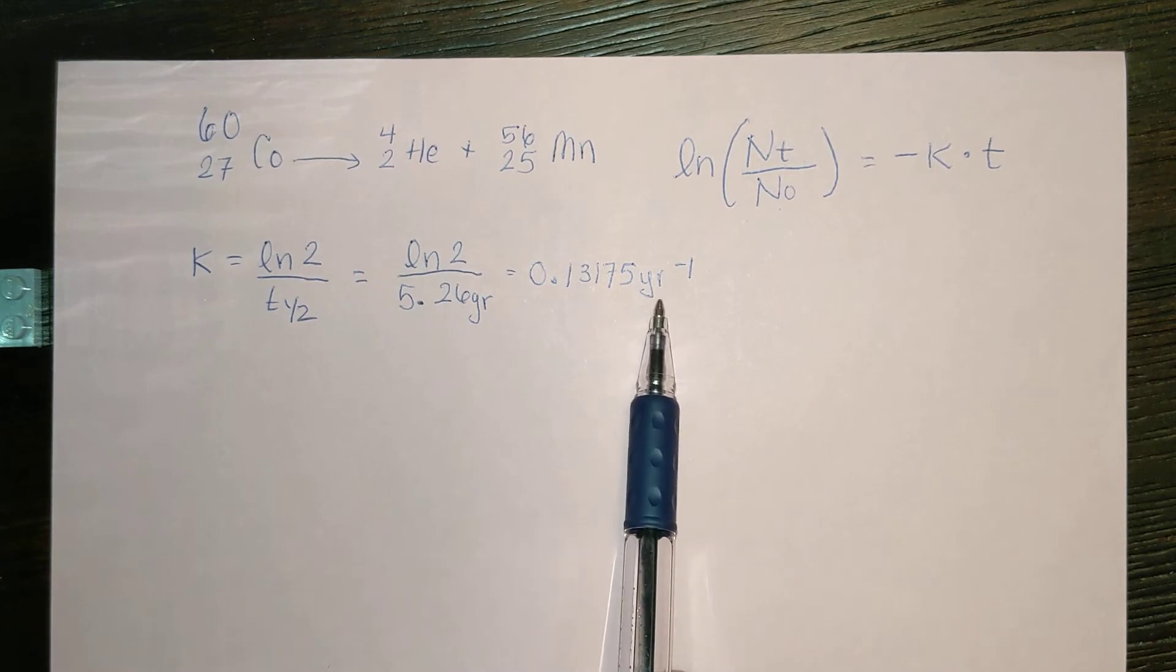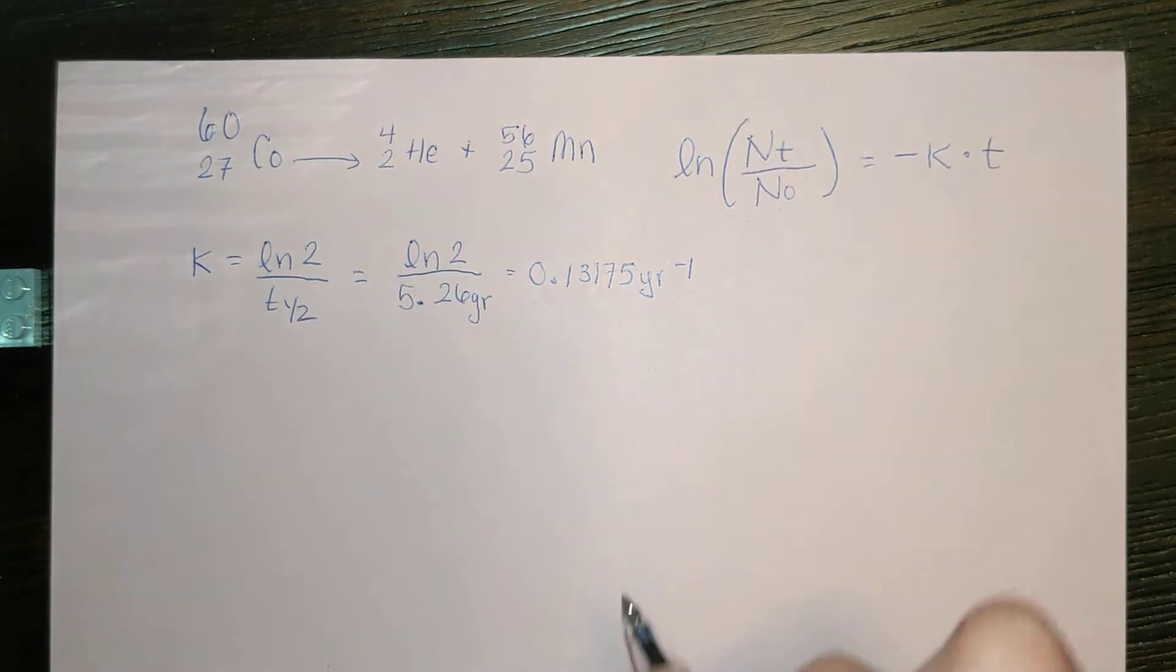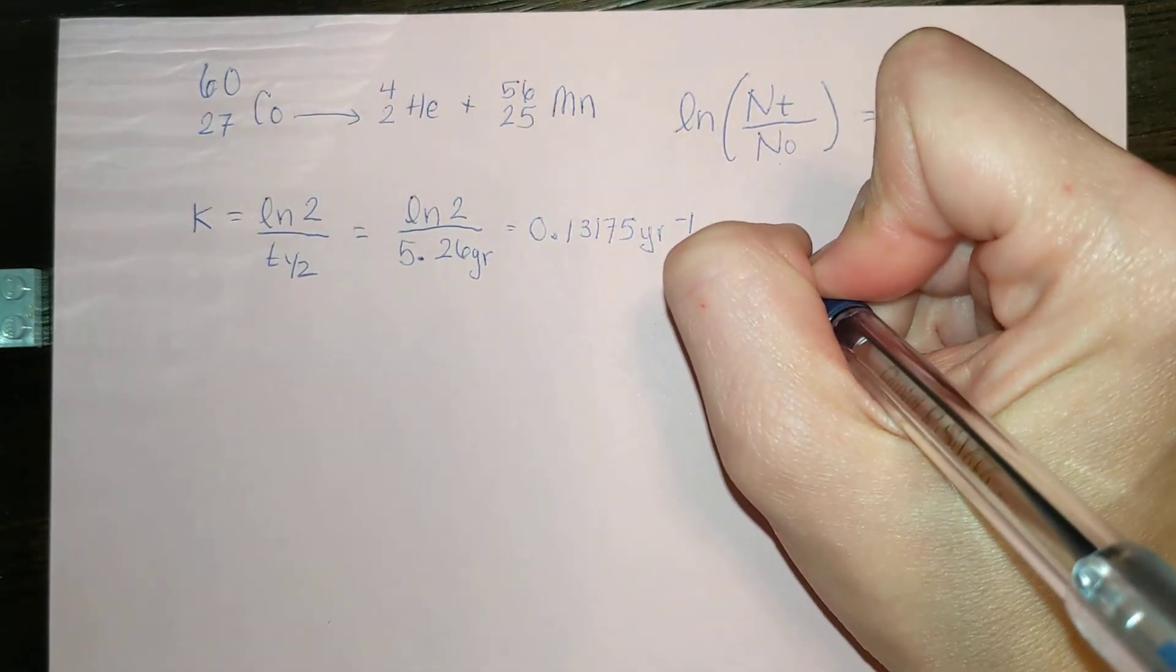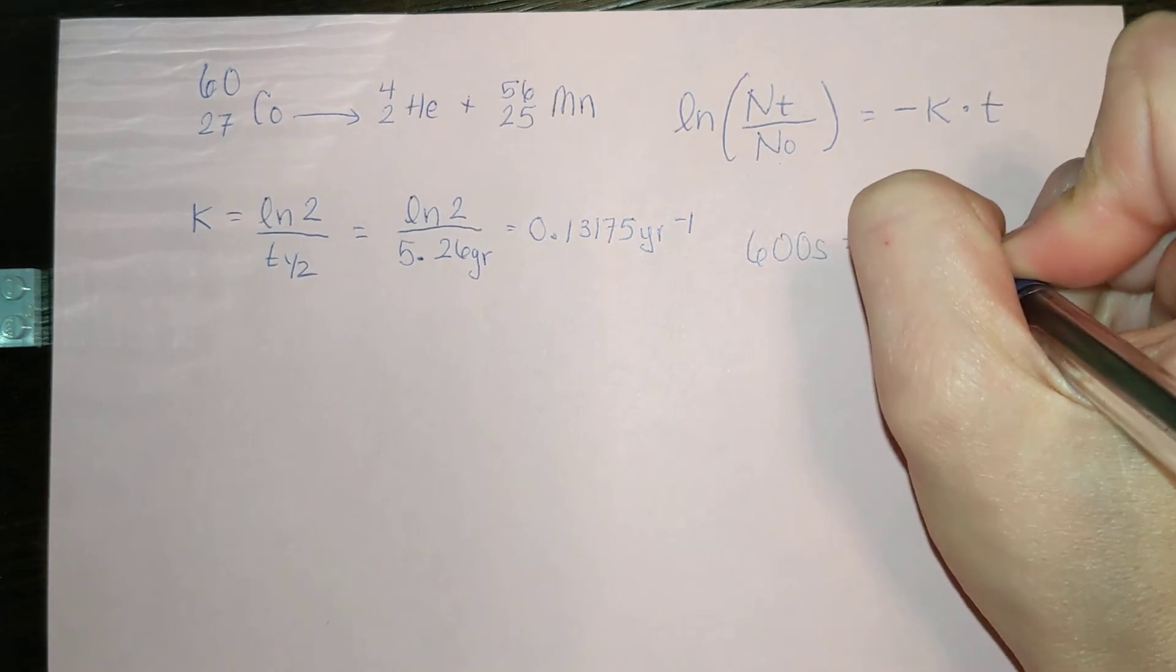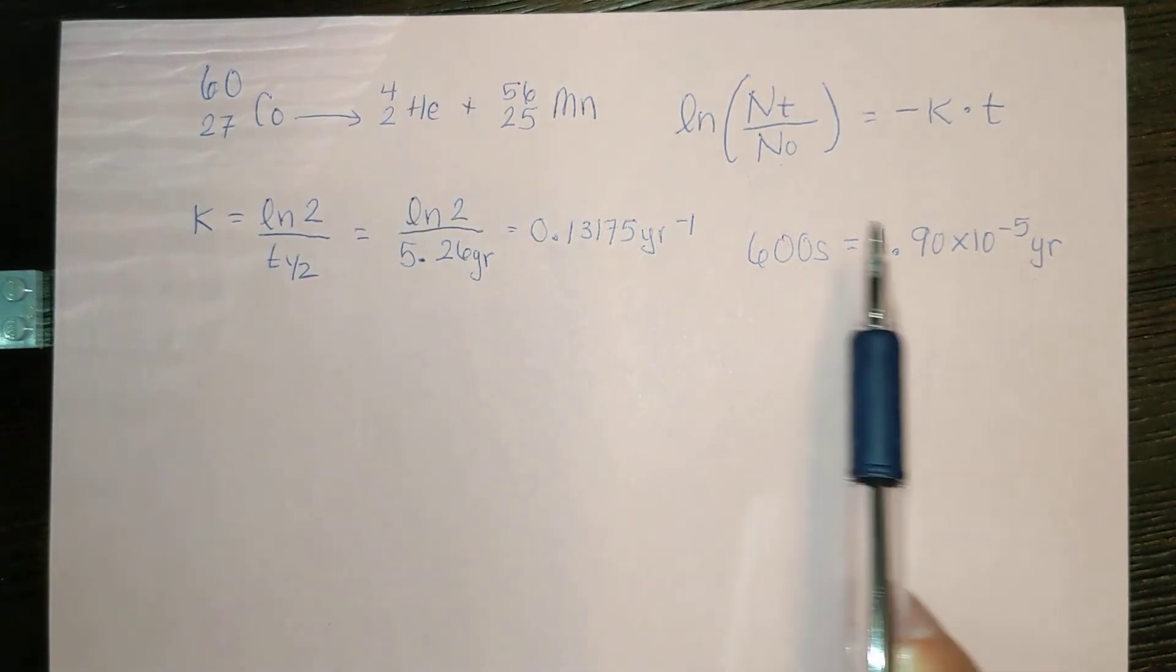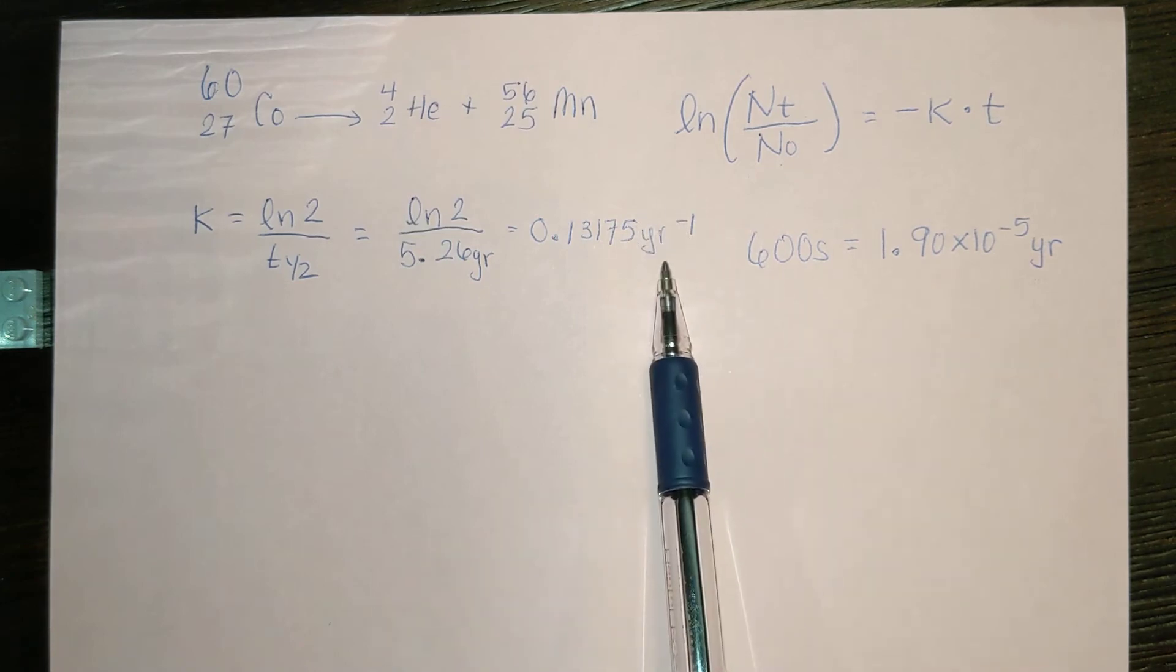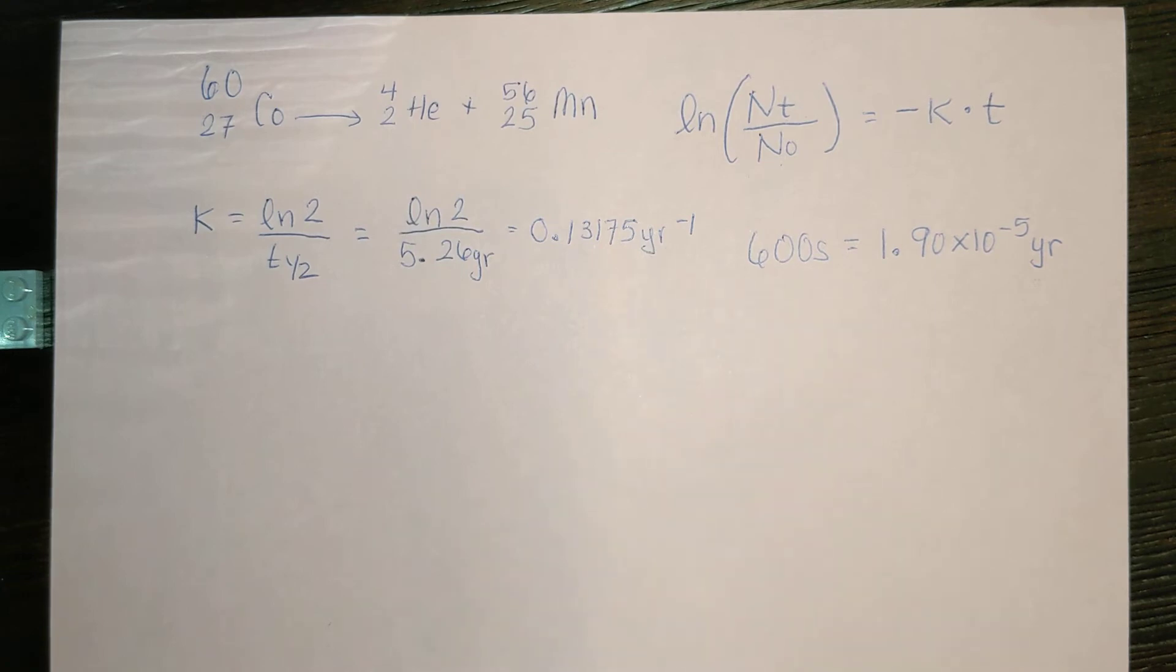At this point, we have our rate constant in reciprocal years, but we are given the problem of 600 seconds. So doing a quick conversion, 600 seconds is equal to 1.90 times 10 to the minus 5 years. Now we have years and years minus 1. You could have converted this into reciprocal seconds, and then you would have had seconds and seconds. That also would have been fine.